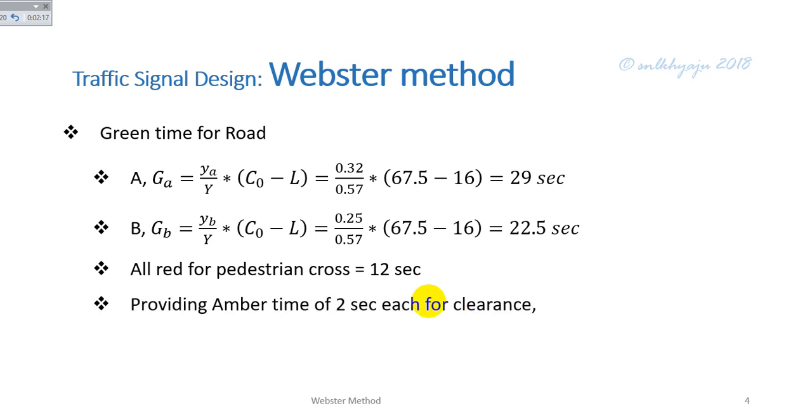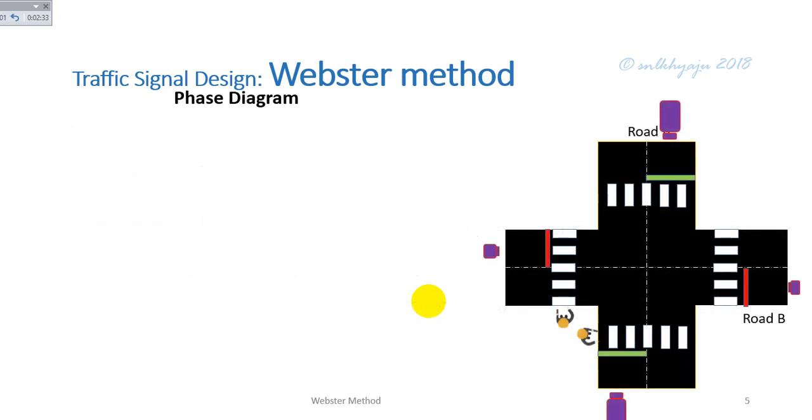Providing amber time of 2 seconds for clearance, the total cycle length is calculated as 67.5 seconds. Now for phase design.